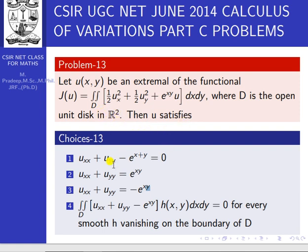Then u satisfies: option one — uxx + uyy − e^(x+y) = 0; option two — uxx + uyy = e^(xy); option three — uxx + uyy = −e^(xy); option four — double integral over d of (uxx + uyy − e^(xy)) · h(x,y) dx dy = 0, for every smooth h that vanishes on the boundary of d.